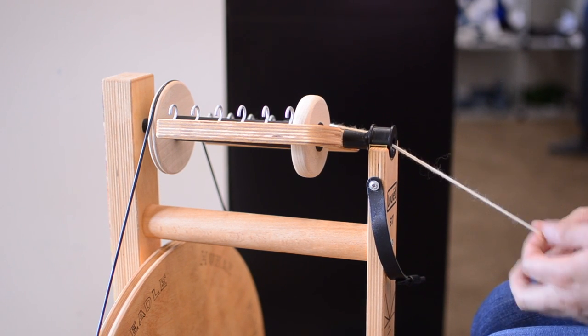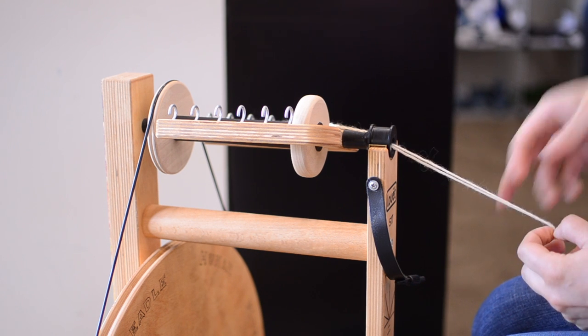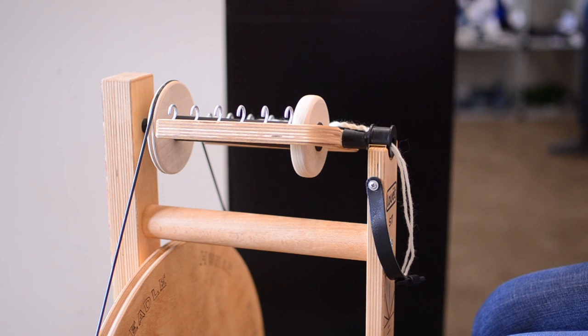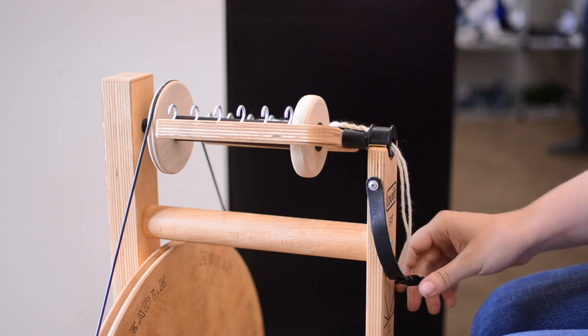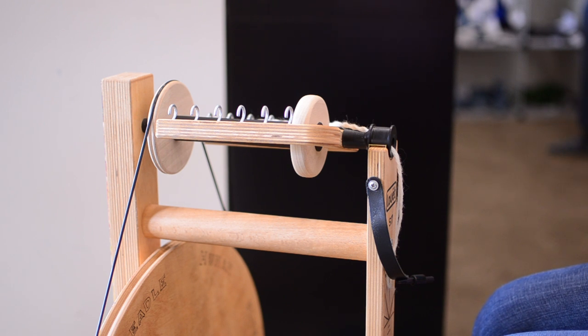So if you're having trouble with your tension, a lot of people find that bobbin lead wheels, particularly at first, have very strong tension compared to what they might be used to. So it feels like the wheel is really pulling on the fiber, or it's sucking it out of your hands and onto the bobbin before you're done with it. So that's where you need to be mindful of adjusting your tension.